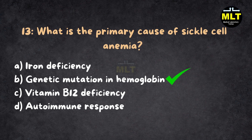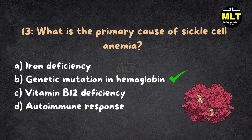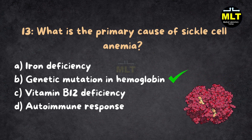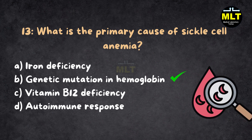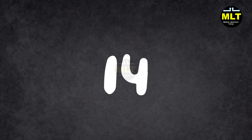Correct answer: B. Genetic mutation in hemoglobin. Explanation: Sickle cell anemia is caused by a mutation in the beta globin gene, resulting in abnormal hemoglobin S that causes RBCs to sickle under low oxygen conditions.